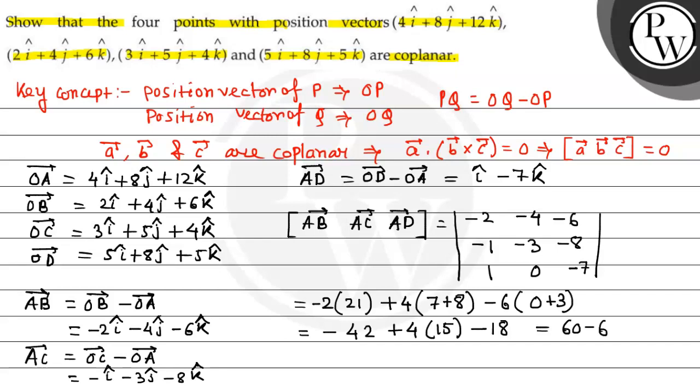So we get 60 minus 60, that is equal to 0. So the four position vectors are coplanar. In this way, we prove that the four position vectors are coplanar.